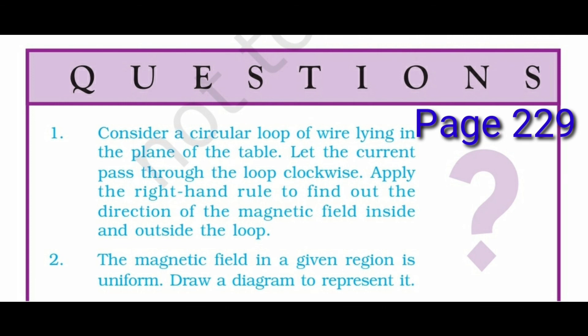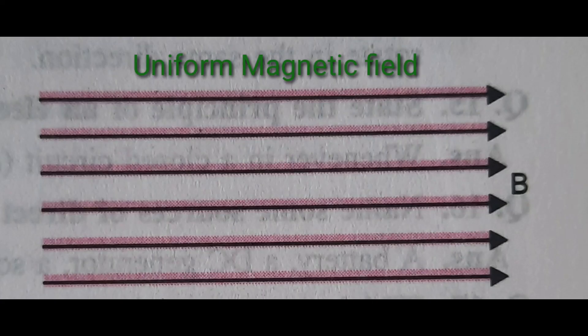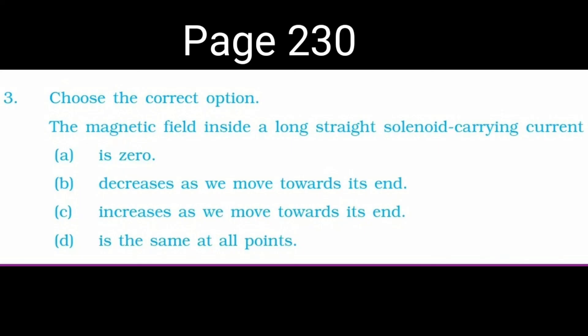Question 2: The magnetic field in a given region is uniform — draw a diagram to represent it. The answer uses parallel and equidistant magnetic field lines, where B represents the magnetic field. Question 3: The magnetic field inside a long straight solenoid carrying current is: (A) zero, (B) decreases toward ends, (C) increases toward ends, or (D) same at all points. Since field lines inside are parallel straight lines, the field is the same at all points — answer is D.